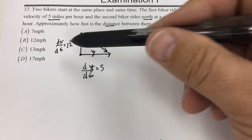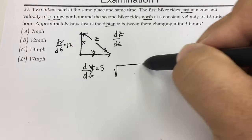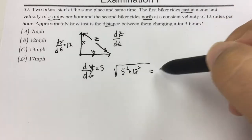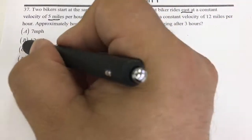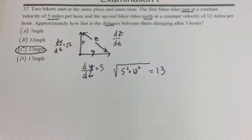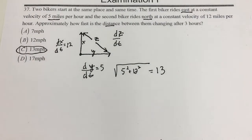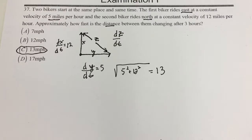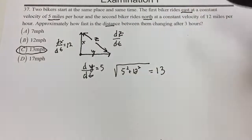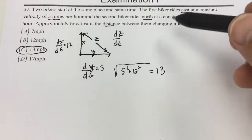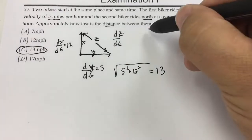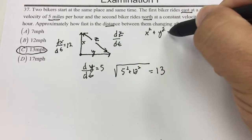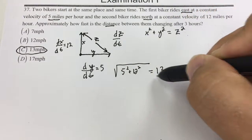One student of mine just did 5-12 and it wound up being 13, and he got the correct answer of choice C for number 37 — just using the Pythagorean theorem, as quickly as that. I'm going to use implicit differentiation, so I'm going to set it up as Pythagorean theorem: x squared plus y squared equals z squared.